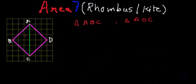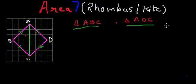Since this is a rhombus, it has all sides equal. In triangle ABC: line AB is equal to line BC, which are equal to line AD and line DC. All four sides of the rhombus are equal, and AC is a diagonal common to both triangles ABC and ADC. Since all corresponding sides of both triangles are equal, these two triangles are congruent by the side-side-side (SSS) identity.